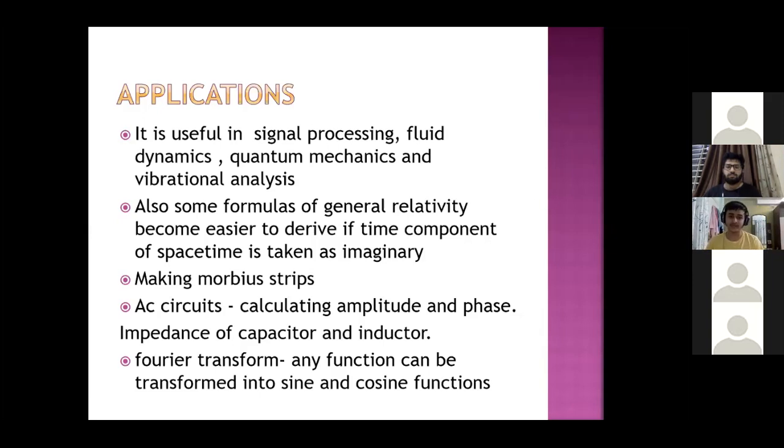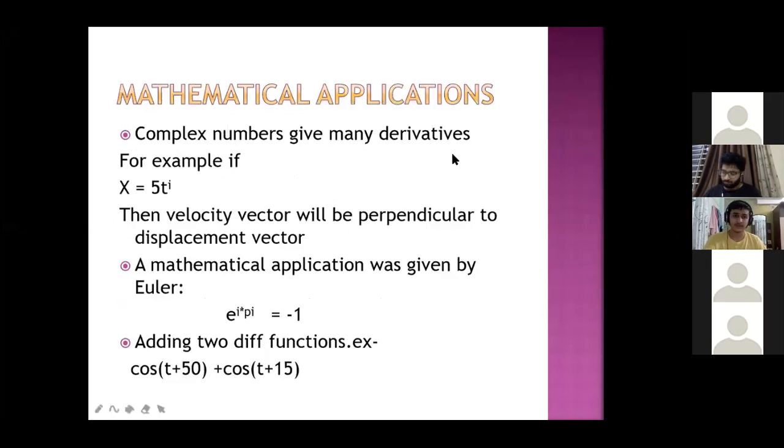Then there is impedance in AC currents, which means resistance. When we calculate it, we use complex numbers. There are derivatives of complex numbers which we learn. And in circular motion we also use complex numbers, which means that the velocity and force are perpendicular to one another because there is an i.